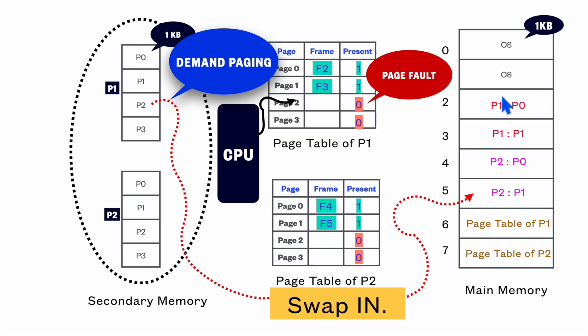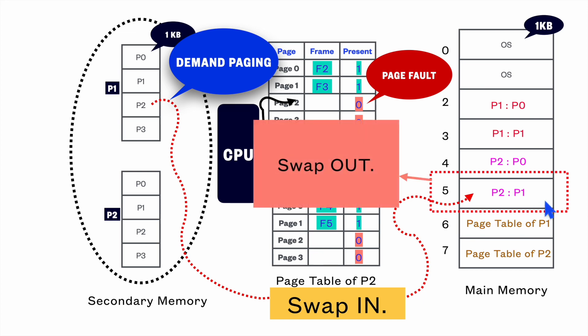As there is no free space in the main memory, the memory management unit will try to free up some space that has not been utilized recently. And if it sees that page 1 of process 2 has not been executed recently, it will try to free up that space.